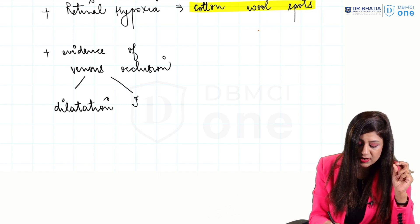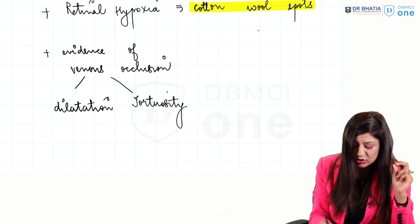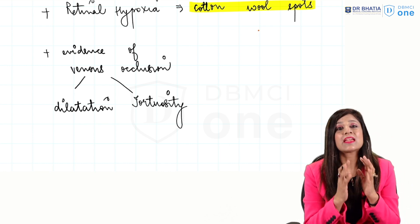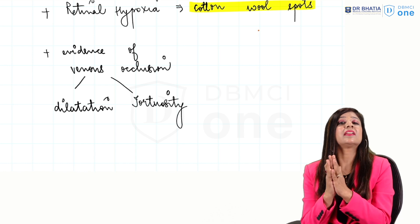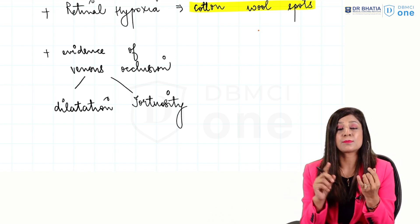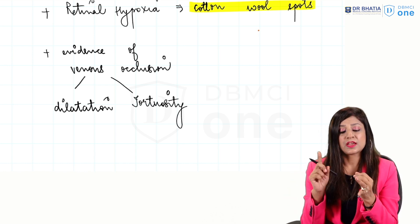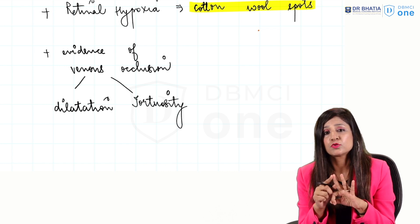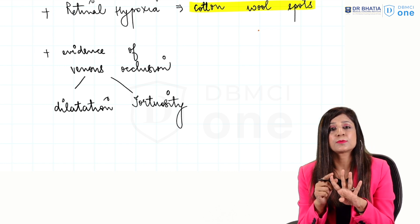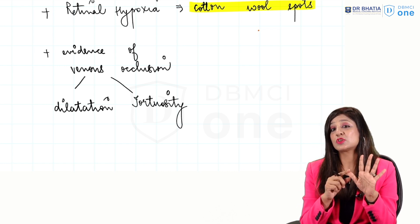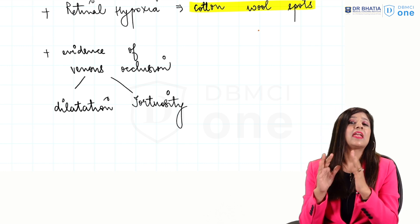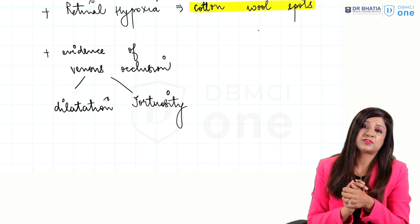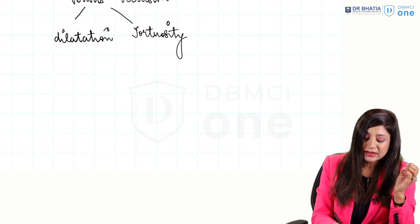So the key features they can give you in a question are: venous dilatation, tortuosity of vessels, cotton wool spots, and the splashed tomato appearance, along with a history of hypertension and smoking. With these findings, you can be clear that it is a case of CRVO.